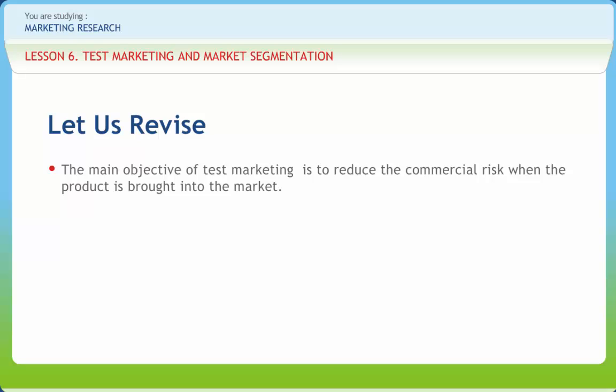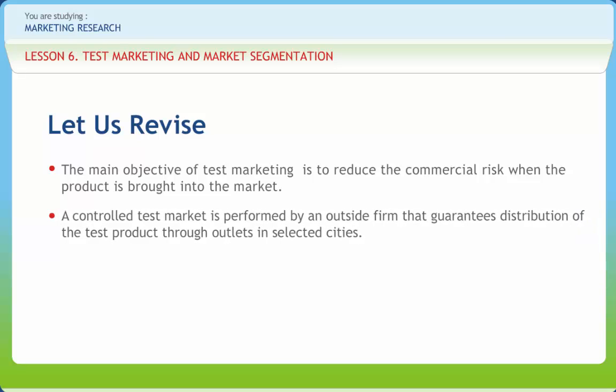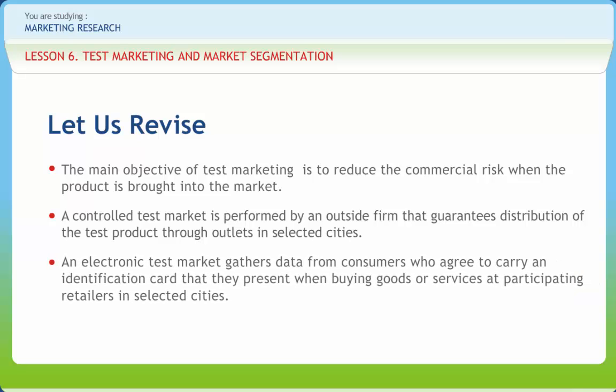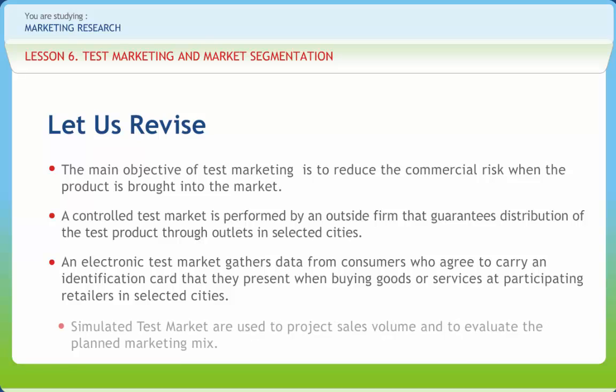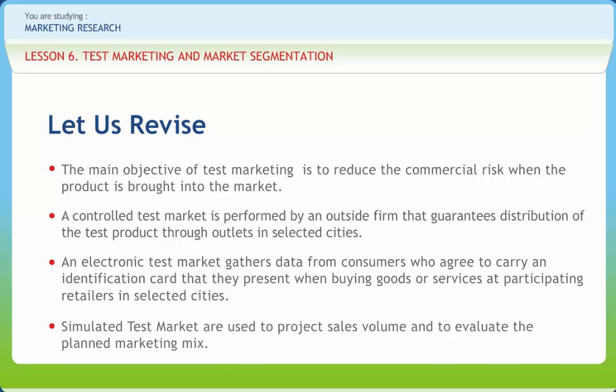Before we end, let us briefly revise what we have studied. Test marketing is a controlled experiment done in a limited part of the marketplace whose aim is to predict the sales or profit consequences, either in absolute or relative terms, of one or more proposed marketing actions. Its main objective is to reduce the commercial risk when the product is brought into the market. A controlled test market is performed by an outside firm that guarantees distribution of the test product through outlets in selected cities. An electronic test market gathers data from consumers who agree to carry an identification card that they present when buying goods or services at participating retailers in selected cities. Simulated test market is used to project sales volume and to evaluate the planned marketing mix.